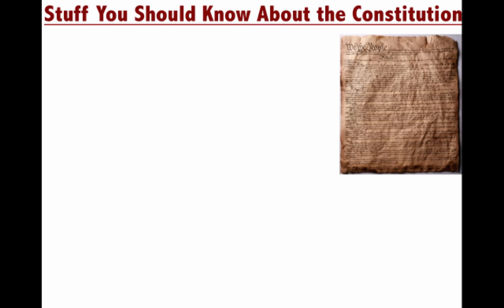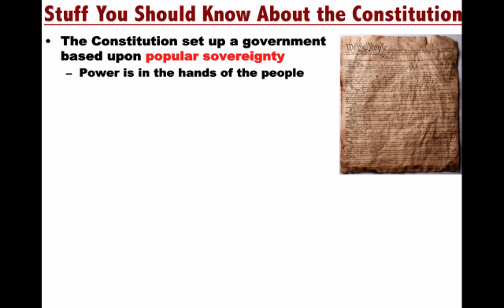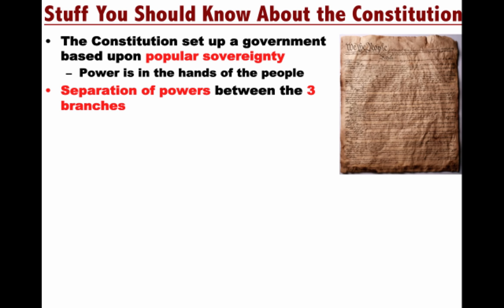The new government took effect in 1789 when George Washington took office as the nation's first president. Some important things to know about the Constitution: it set up a government based upon popular sovereignty, meaning power is in the hands of the people — they are the source of a government's power. Separation of powers between the three branches of government is very much a part of this constitutional system, and it's important to note that the power of government is limited through checks and balances.